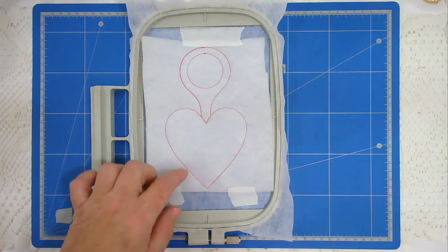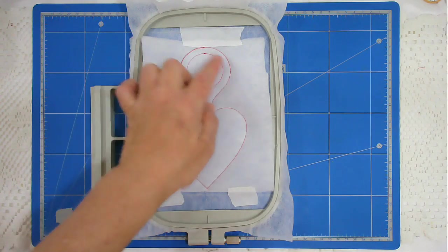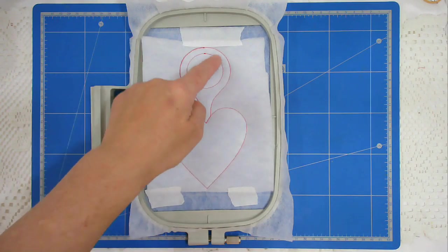Now I'm going to remove all the excess batting from around the edge and also from the center of the circle here.